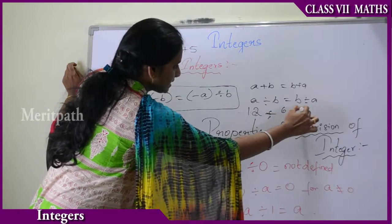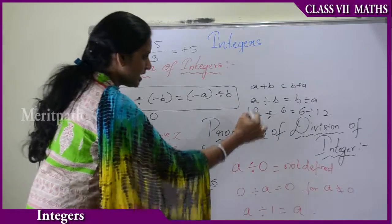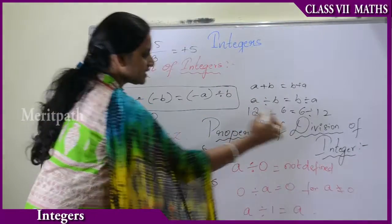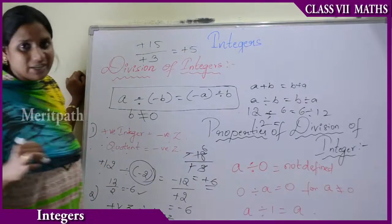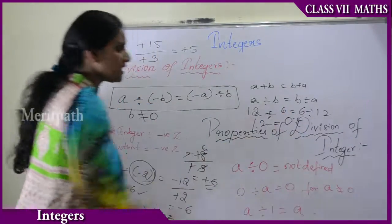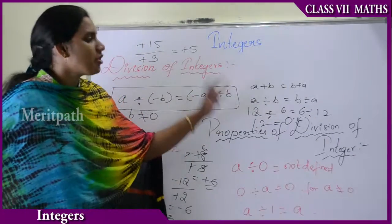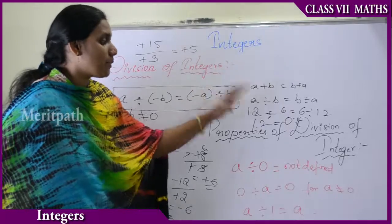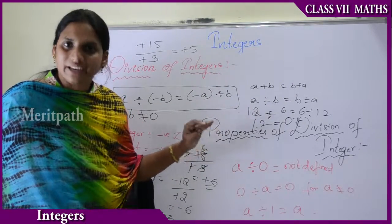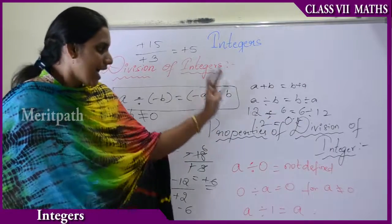Let us verify with an example: 12 divided by 6 equals 2, and 6 divided by 12 equals 0.5. Since LHS is not equal to RHS, we conclude that the commutative property does not hold for division of integers, whole numbers, or rational numbers.